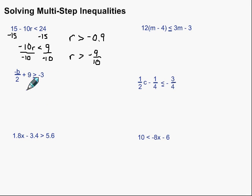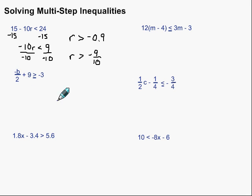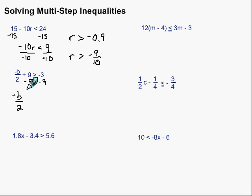Let's take a look at the next one. We've got another situation — let's start by getting rid of this plus 9. Our goal in solving is to always get that variable by itself, so we get rid of the plus 9 first by doing the opposite: minus 9 on both sides. Bring down what we have left: we have negative b over 2 is greater than or equal to negative 3 minus 9, which is negative 12.